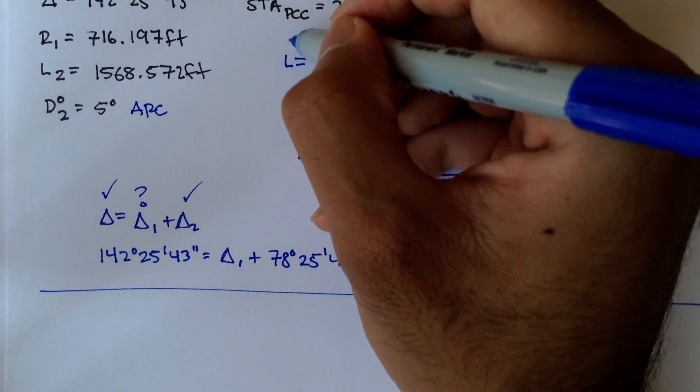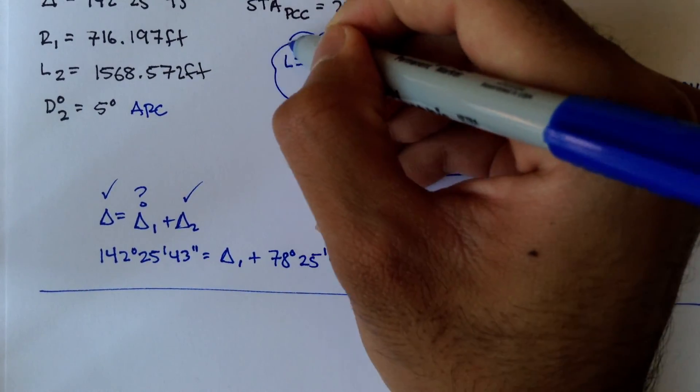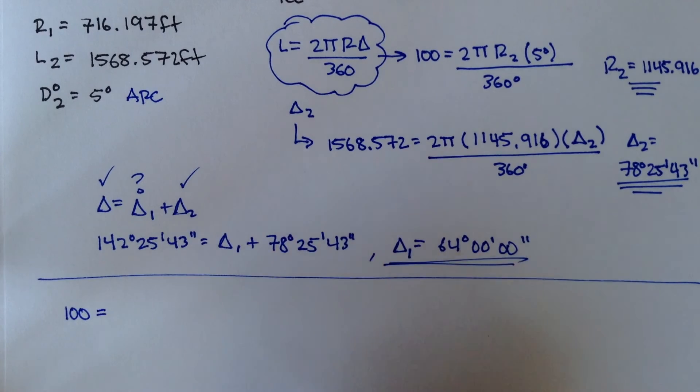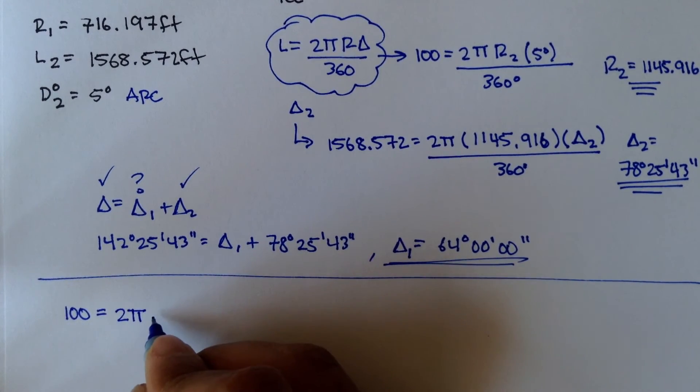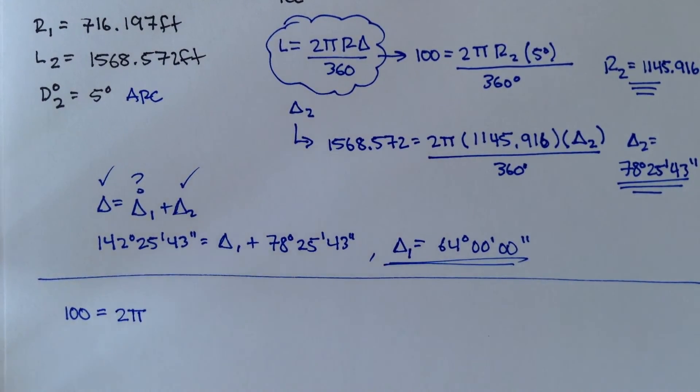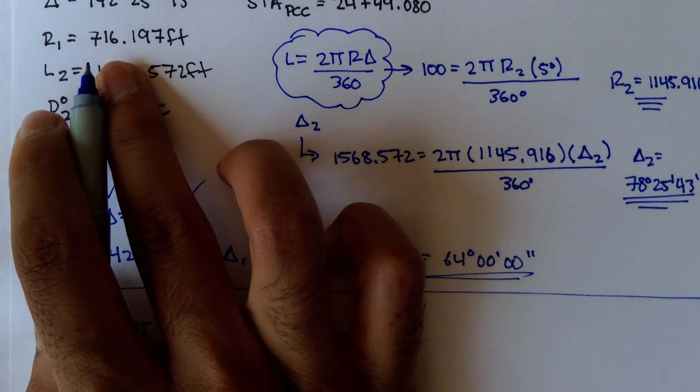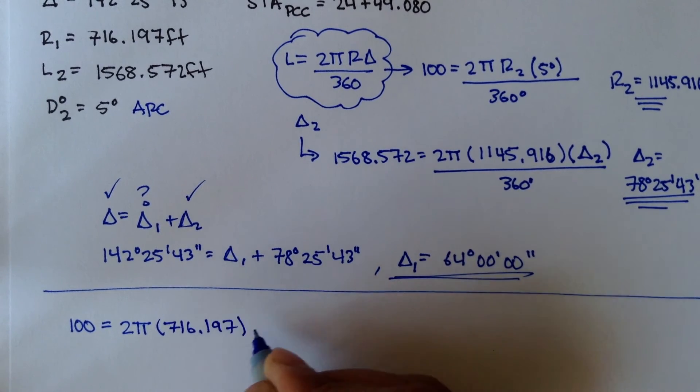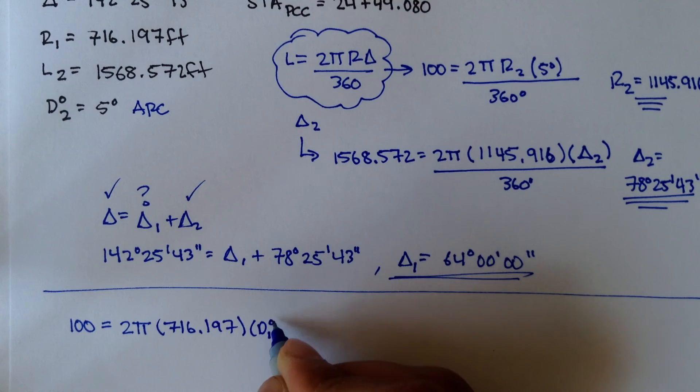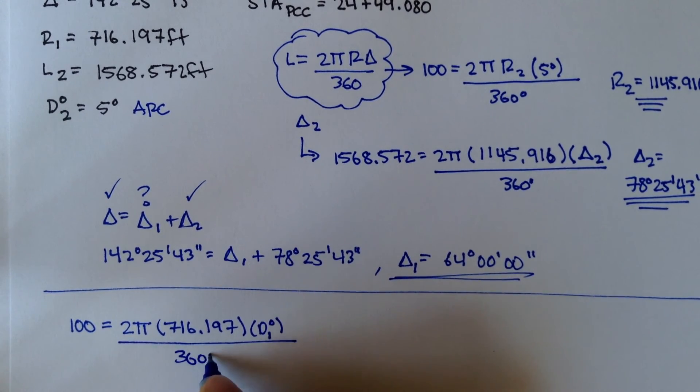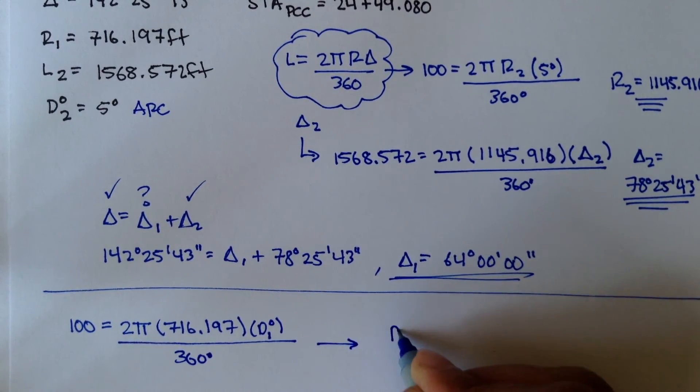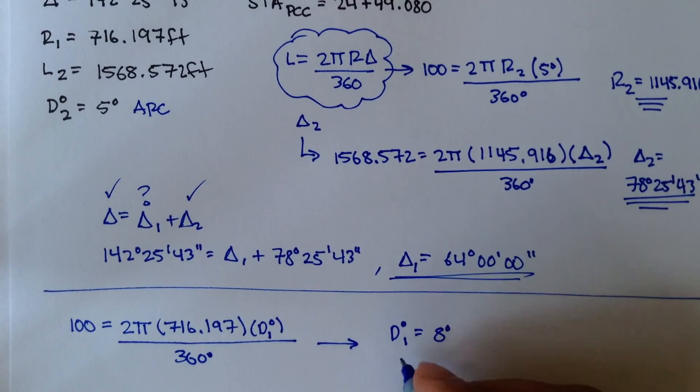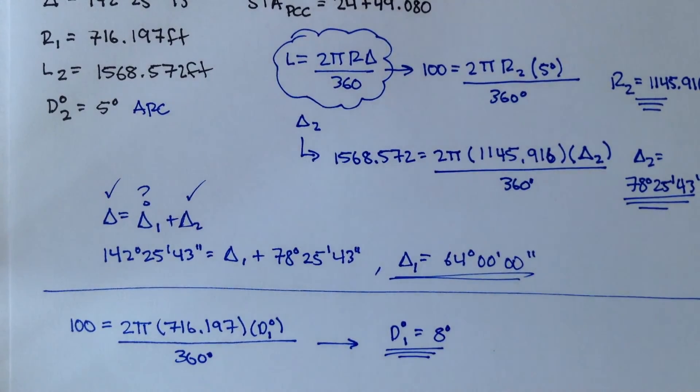Length, I'm talking about this formula right here. Length is equal to 2 pi r delta over 360. And our length is going to be 100 for curve 1. And that's equal to 2 pi r1. R1 is actually given. It's 716.197. Degree of curvature for curve 1. That's divided by 360. We solve that out. Degree of curvature for curve 1 should be a nice 8 degrees.